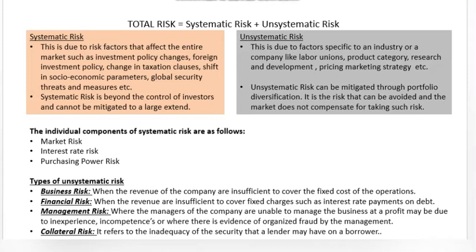The individual components of systematic risk are: market risk, interest rate risk, and purchasing power risk. Types of unsystematic risk include: business risk — when the company's revenue does not cover fixed costs; financial risk — when revenue is insufficient to cover fixed charges such as interest payments on debt; management risk — when management is wrong, fraudulent, inexperienced, or incompetent; and collateral risk — which refers to the inadequacy of security that a lender may have on a borrower.